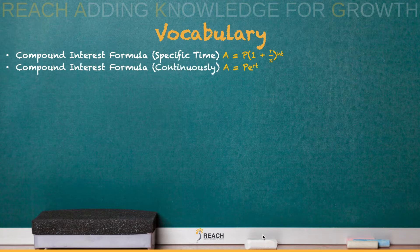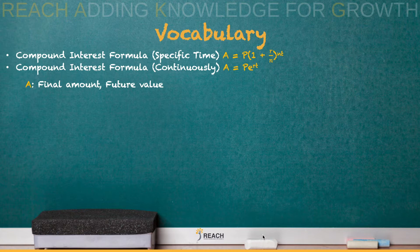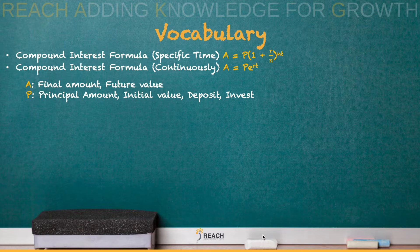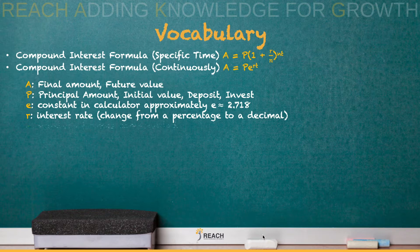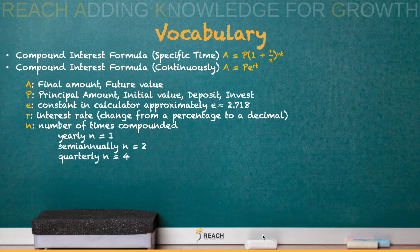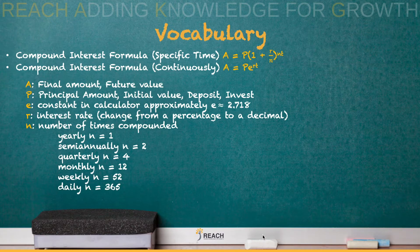Next we have the compound interest formula for continuously: A equals P times E raised to the RT power. A is our final amount, our future value. P is our principal amount, our initial value — they may use the word deposit, invest, or start out with. E is a constant in your calculator, approximately 2.718. R is your interest rate — always change it from a percentage to a decimal. N is the number of times compounded: yearly is 1, semi-annually is 2, quarterly is 4, monthly is 12, weekly is 52, and daily is 365.